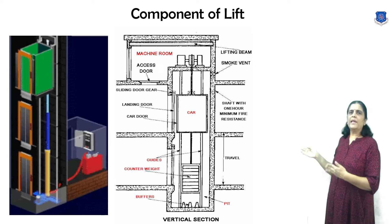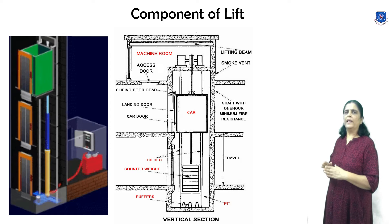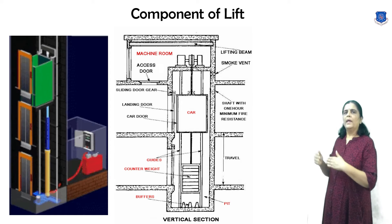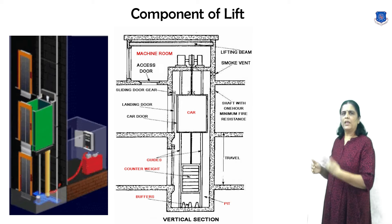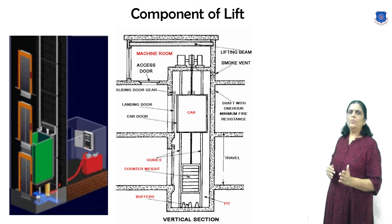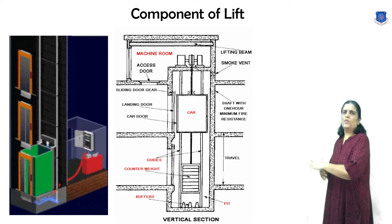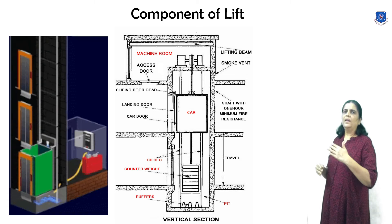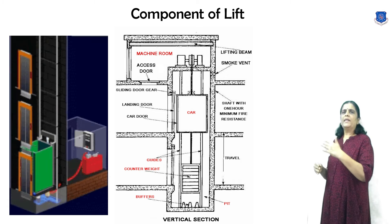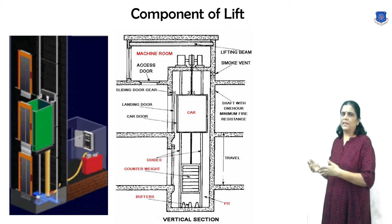Machine beam: a steel beam positioned directly over the elevator in the machine room, used to support elevator equipment. Machine room: usually located at the top of the shaft and houses the winding machine and other equipment.